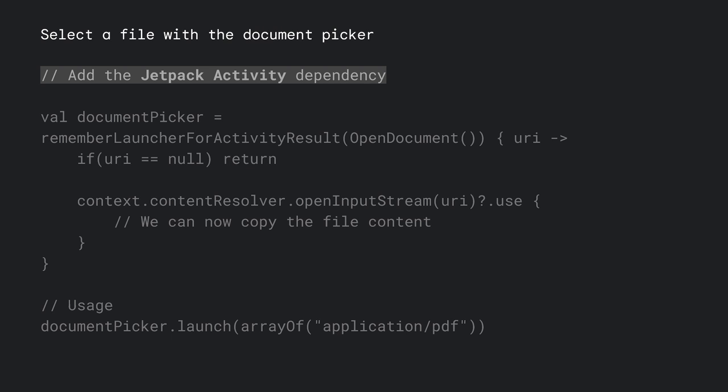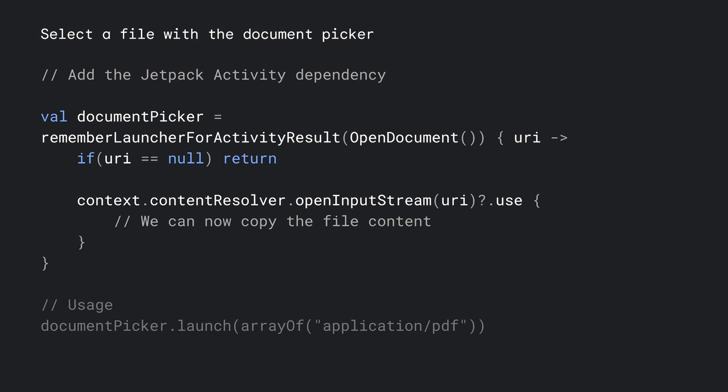Now let's go to another use case. Let's say we need to access document files, so we will rely on the document picker via the ACTION_OPEN_DOCUMENT intent. First, let's add the Jetpack Activity dependency to our project if it's not there already. After that, we register our OpenDocument ActivityResult, which will handle the intent result logic. If the user has selected a file, we'll have a URI that we can open using the content resolver. Finally, we launch our intent handler with the MIME types we want to filter on — in this case, it's a PDF. The ACTION_OPEN_DOCUMENT intent is available on devices running Android 4.4 and higher.